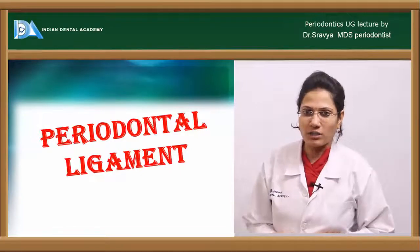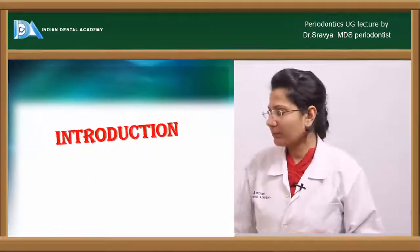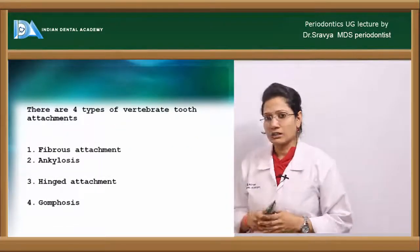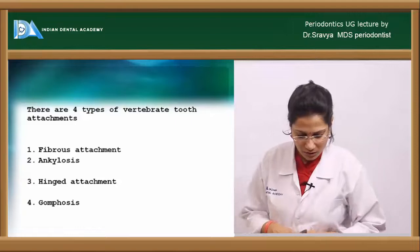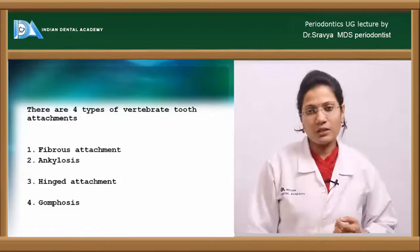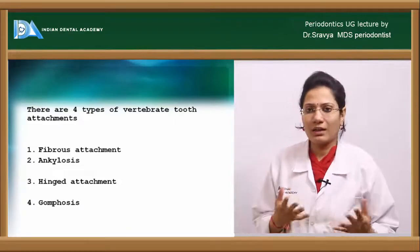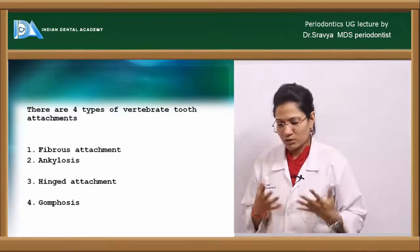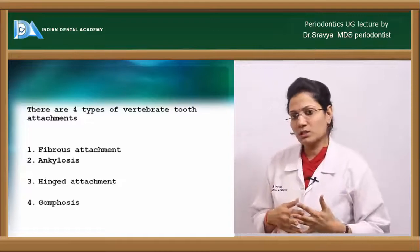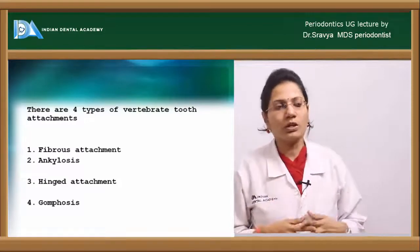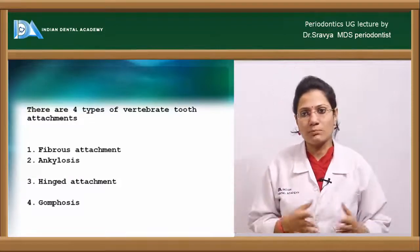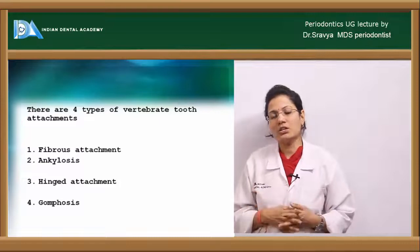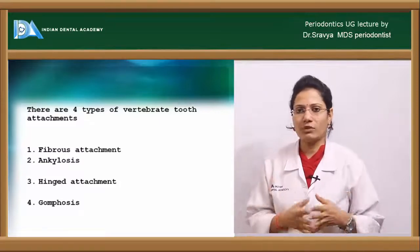The topic is periodontal ligament. It is one of the soft connective tissues which is the supporting tissues of the tooth. The periodontium is composed of your gingiva, periodontal ligament, your cementum and the alveolar bone.